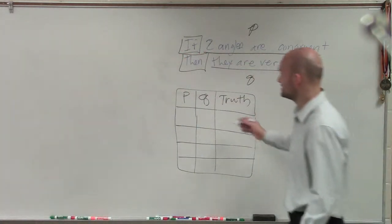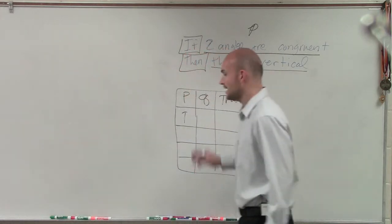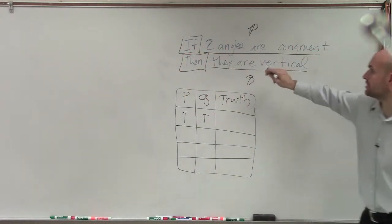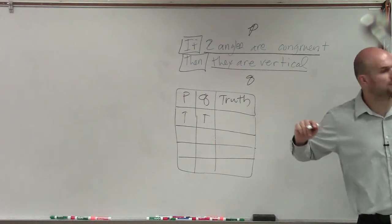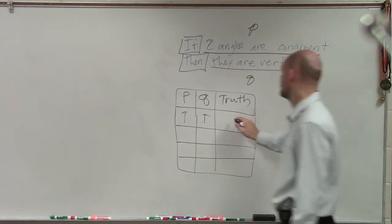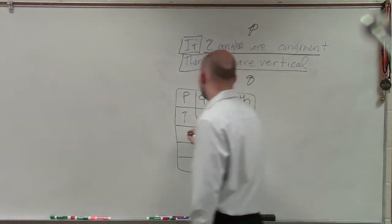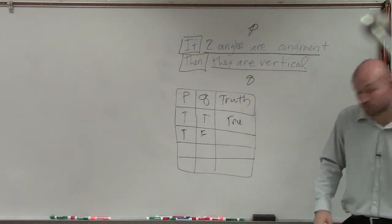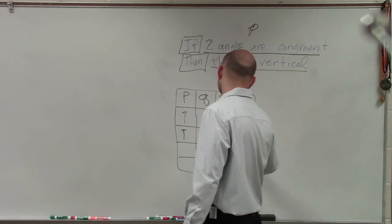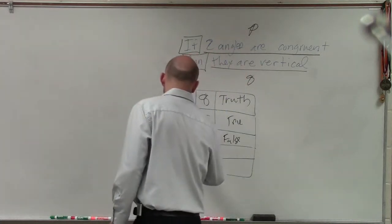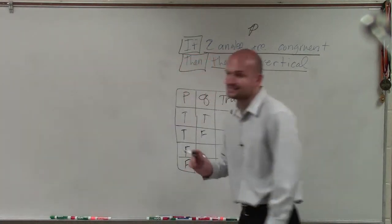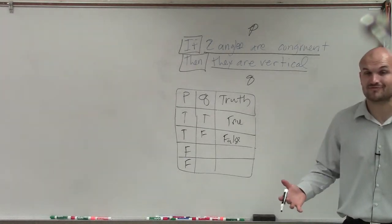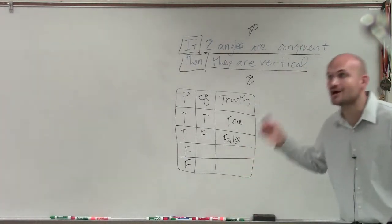We could say our hypothesis is true and our conclusion is true — so if P is true and Q is true, our statement is true. If our hypothesis is true and our conclusion is false, then our statement is false. And any time our hypothesis was false, our statement was always true.